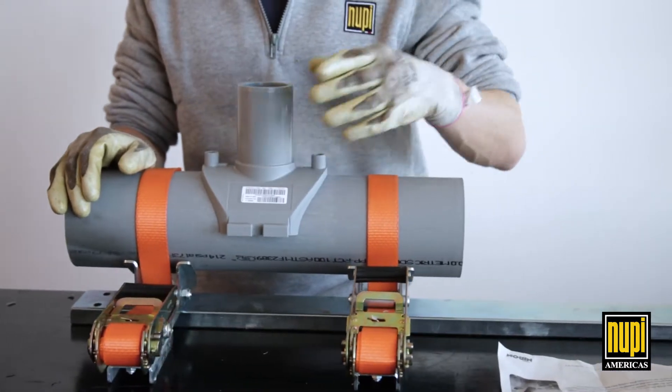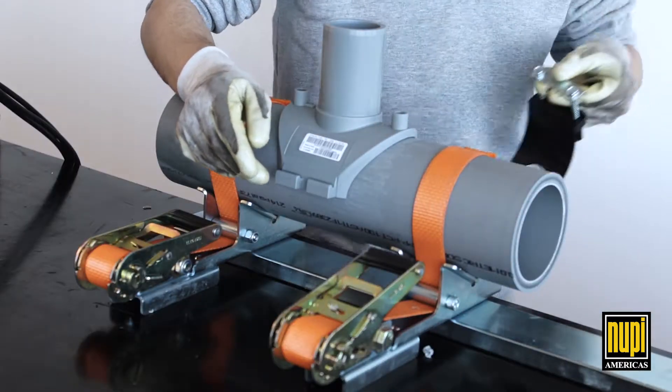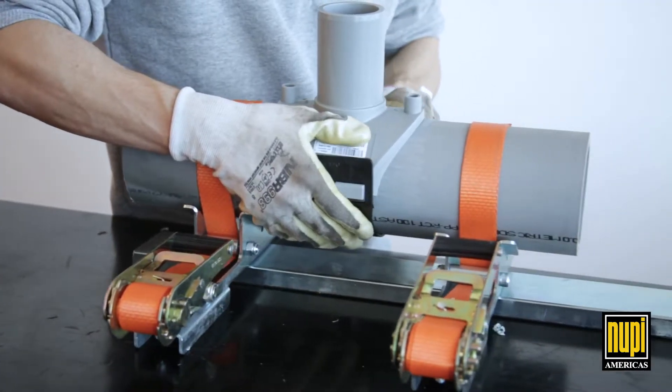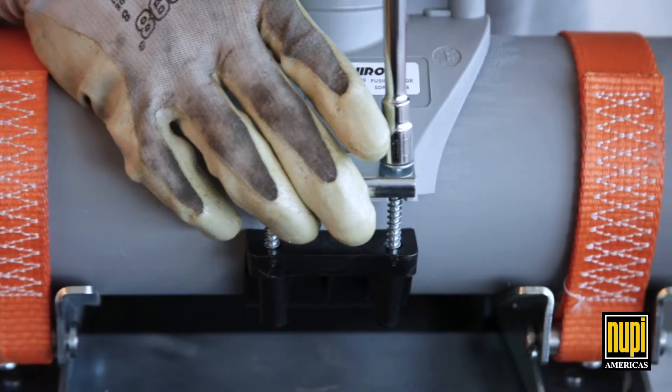Apply the saddle onto the pipe being careful not to dirty the previously cleaned surfaces. Fasten the saddle on the pipe using the quick coupling plastic under clamp.